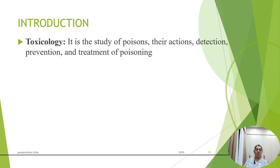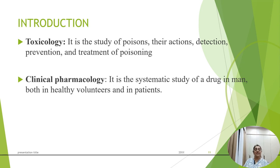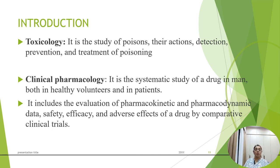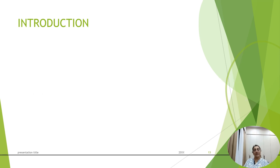Toxicology is the study of poisons — their action, detection, prevention, and treatment of poisoning. Clinical pharmacology is the systematic study of drugs in human beings, both in healthy volunteers as well as patients. It includes the evaluation of pharmacokinetic and pharmacodynamic data, safety, efficacy, and adverse effects of drugs by comparing clinical trials.